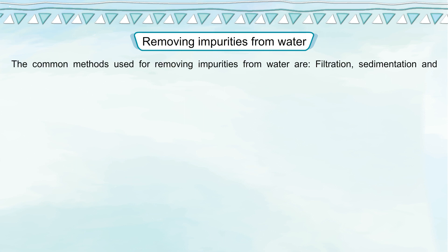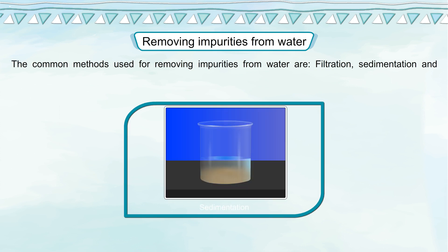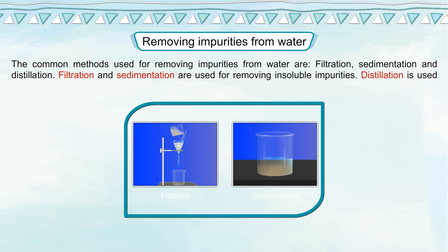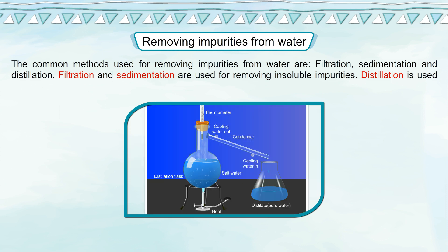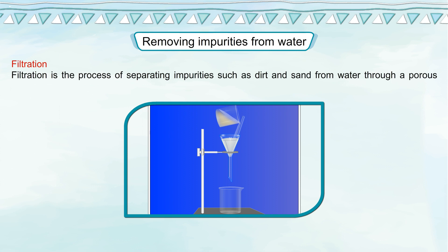Removing impurities from water. The common methods used are filtration, sedimentation and distillation. Filtration and sedimentation are used for removing insoluble impurities, while distillation is used for removing soluble impurities. Filtration is the process of separating impurities such as dirt and sand from water through a porous medium that can be penetrated easily by water.